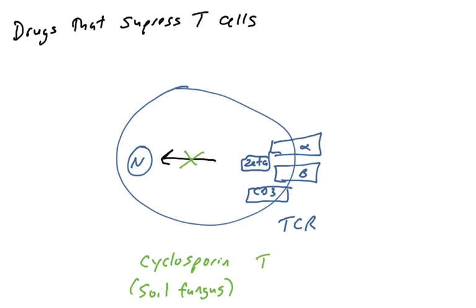There's another compound that is similar in function to cyclosporine called tacrolimus, which is isolated from a soil bacterium. It also inhibits signaling from the T-cell receptor, and so can inhibit the activation of naive T-cells or inhibit the effector function of T-cells.